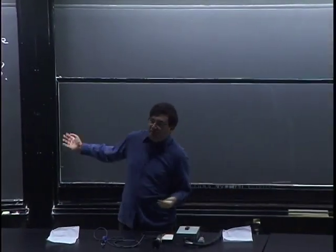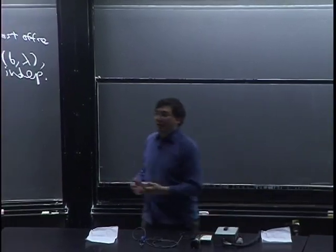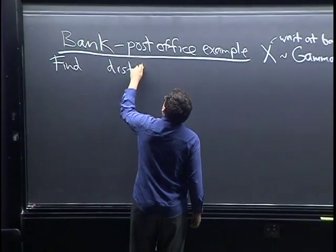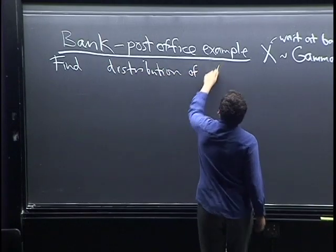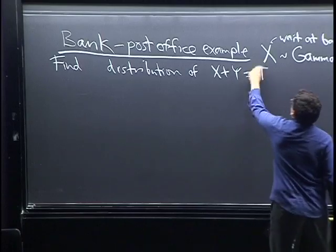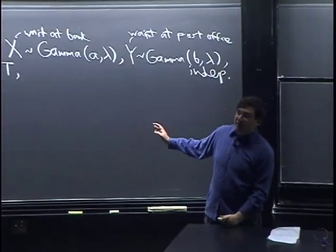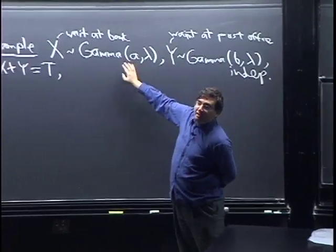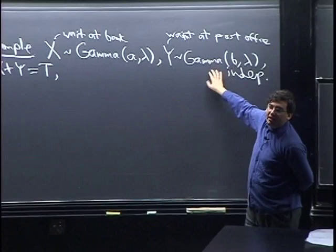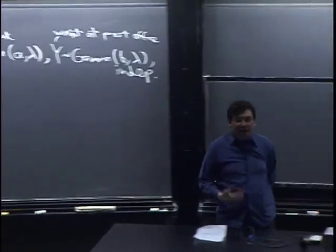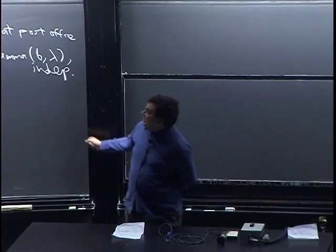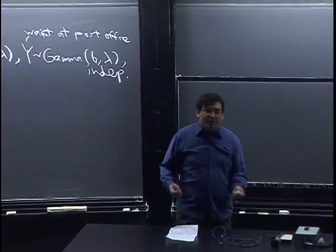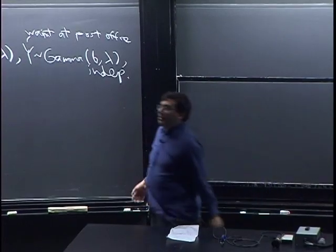Now the question is: what's the distribution of the total waiting time T = X + Y? We already know this — if A and B are integers, X is a sum of A IID exponentials and Y is a sum of B IID exponentials, so together they're A+B IID exponentials, giving T ~ Gamma(A+B, λ). For the non-integer case, you can multiply the MGFs and confirm the same result.